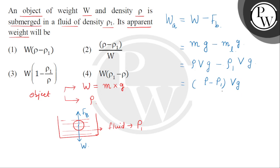अब यहाँ पर हमें replace करना है V को, क्योंकि किसी भी option में volume given नहीं है. So इसके लिए हम help लेंगे that the volume of this object is expressed by its mass divided by the density of its material. तो इसकी density given है हमें rho.